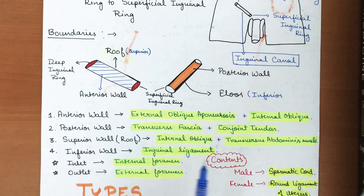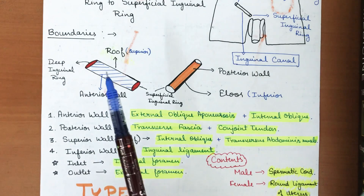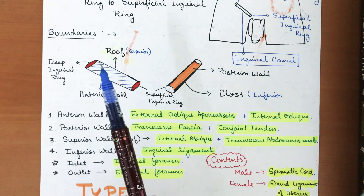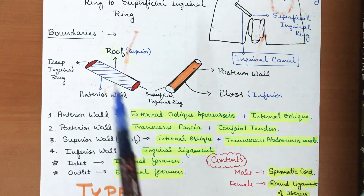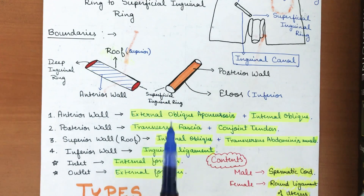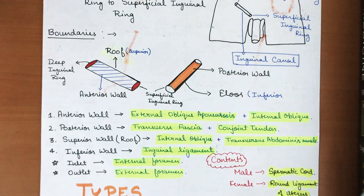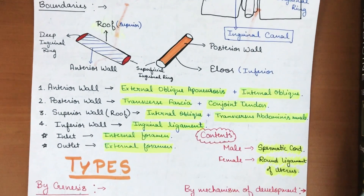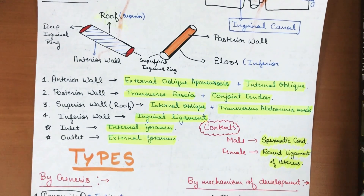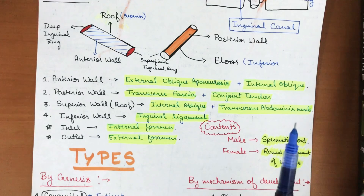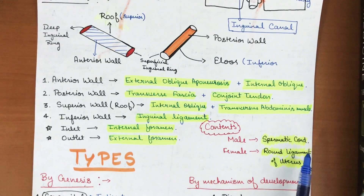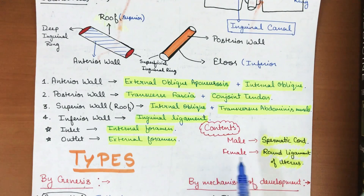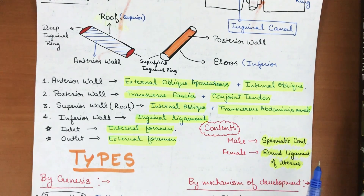The inferior wall is formed by the inguinal ligament. The inlet is formed by the internal foramen (deep inguinal ring) and the outlet is the external foramen (superficial inguinal ring). The contents of the inguinal canal vary between males and females — in males the content is the spermatic cord, and in females it is the round ligament of the uterus.